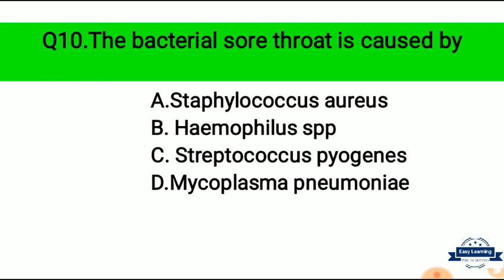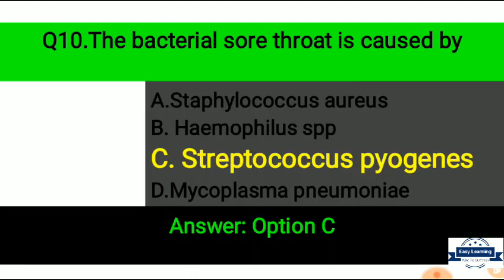Question 10: Bacterial sore throat is caused by — Option A: Staphylococcus aureus, Option B: Haemophilus species, Option C: Streptococcus pyogenes, Option D: Mycoplasma pneumoniae. Correct answer is Option C — bacterial sore throat is caused by Streptococcus pyogenes.